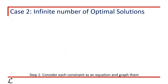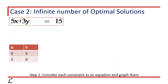Let's go step by step. Step 1 is to consider each constraint as an equation and graph them. The first constraint is 5x plus 3y less than or equals to 15, and if we consider it as an equation, it will be 5x plus 3y equals to 15. To draw this equation, we need two points on the graph. Putting x equals to 0, we obtain y equals to 5, so the first point is (0, 5). Putting y equals to 0, we get x equals to 3, so the second point is (3, 0).